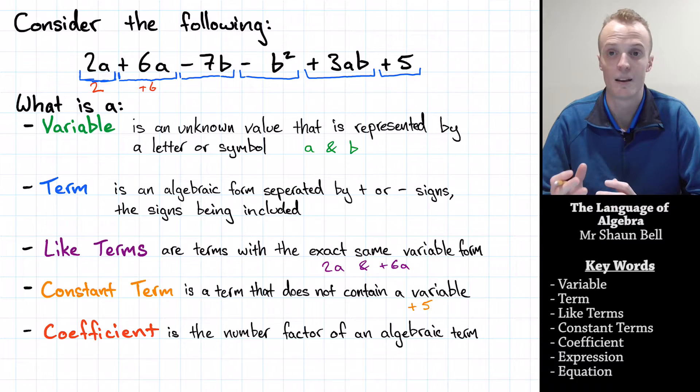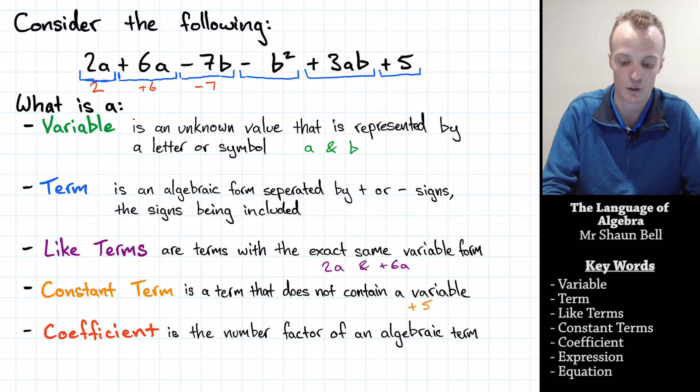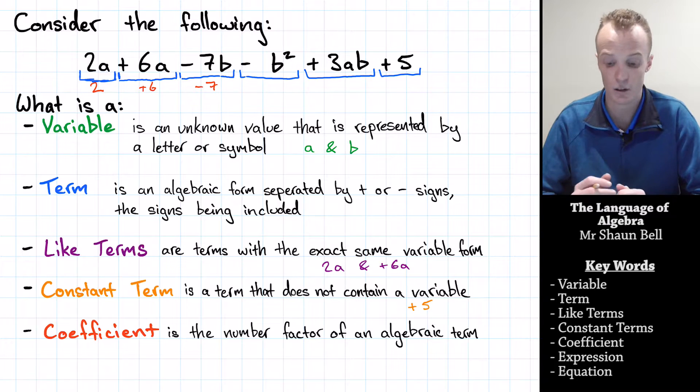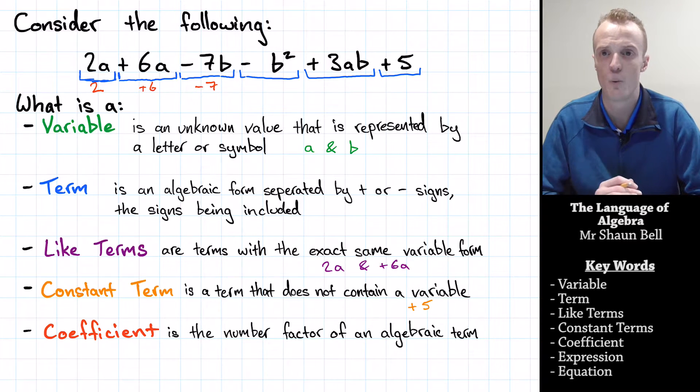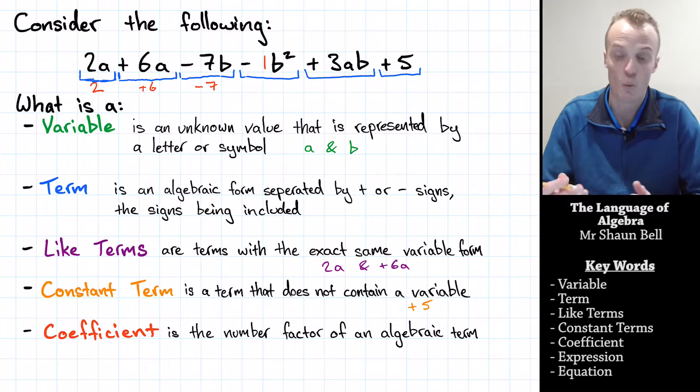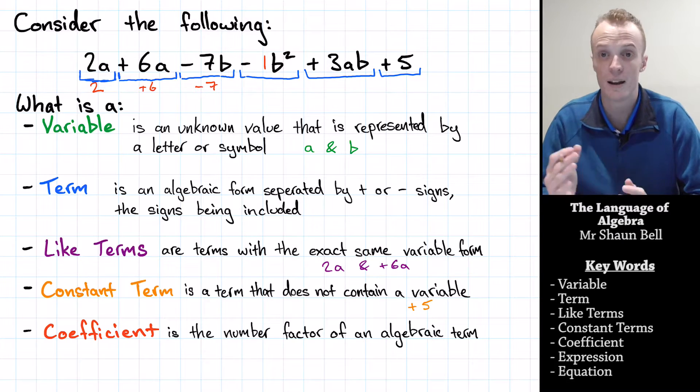Now, in the third term, we've got subtract 7b. So when we talk about the coefficient, we're talking the coefficient of B, which in this case is the subtract 7. Now, in the fourth term, you might initially look at it and go, there isn't a number portion of that term, so therefore, there mustn't be a coefficient. However, we've got to remember that whenever the coefficient is 1, we don't actually write the 1 down. So in this statement here, it's actually negative 1b squared or negative 1 lot of b squared. So therefore, our coefficient is subtract 1.